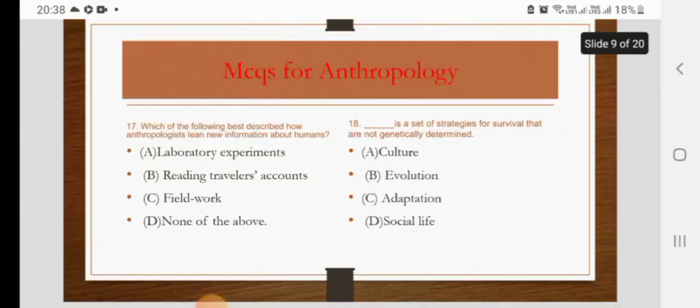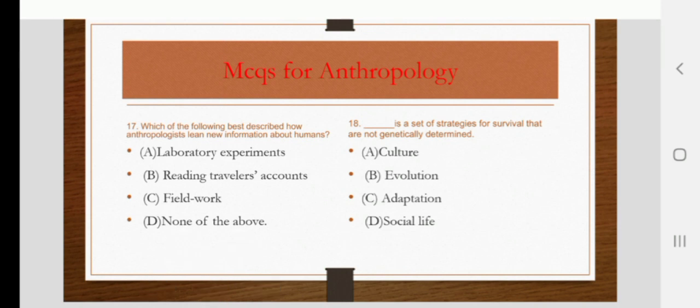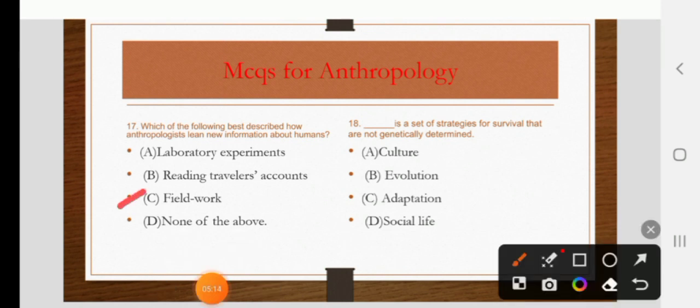Which of the following best describes how anthropologists learn new information about humans? Options are laboratory experiments, reading travelers' accounts, fieldwork, or none of the above. The right answer is C: fieldwork.